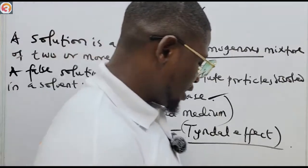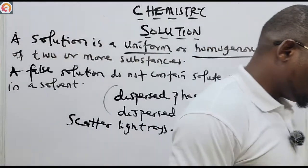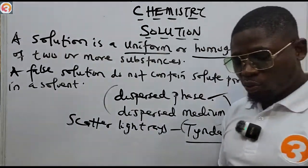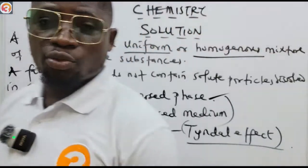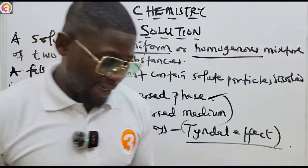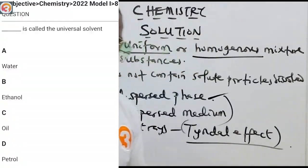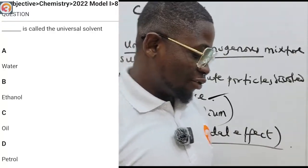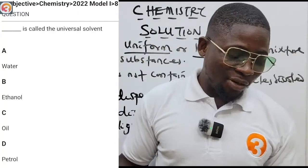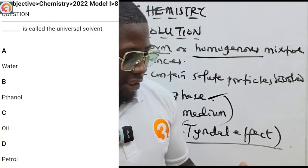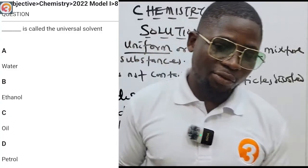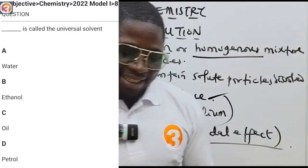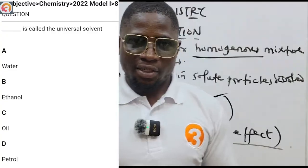Here is a simple past question from JAMB 2022, question number eight: 'Dash is called the universal solvent.' The answer is water — water is the universal solvent.